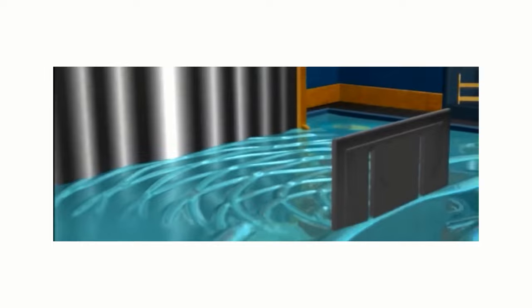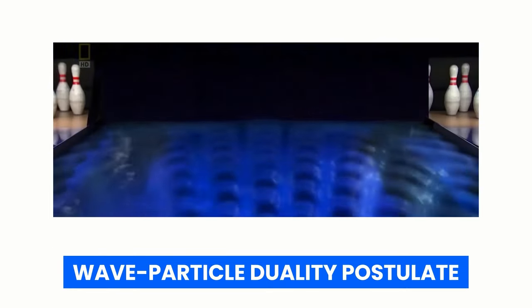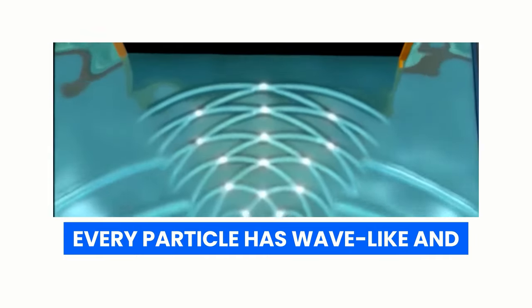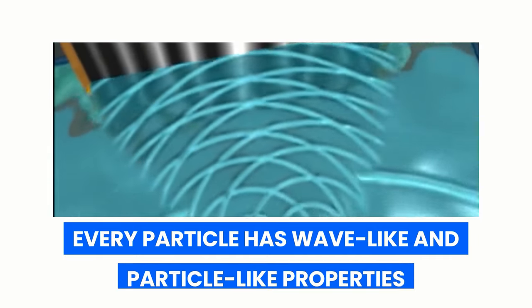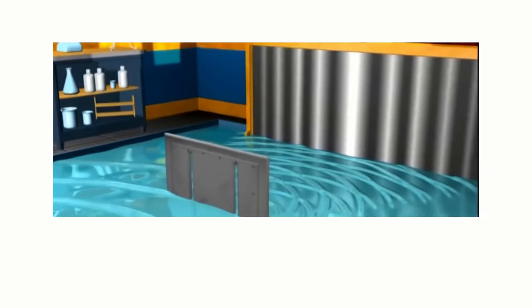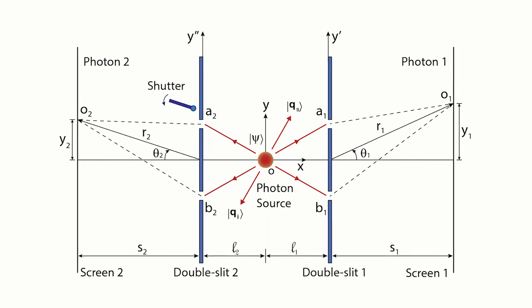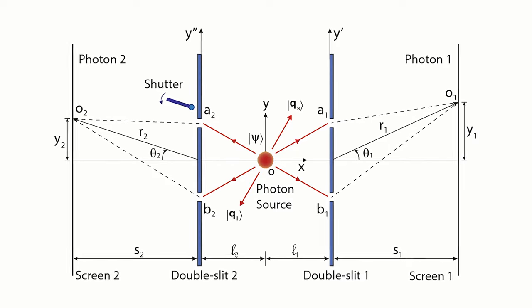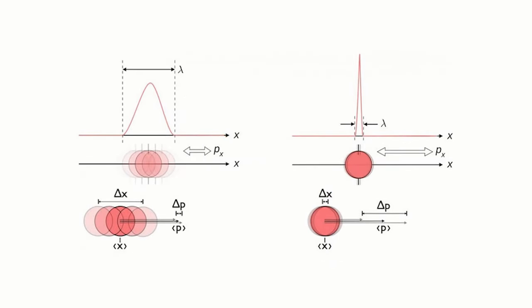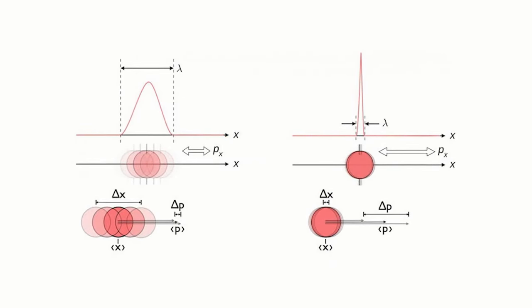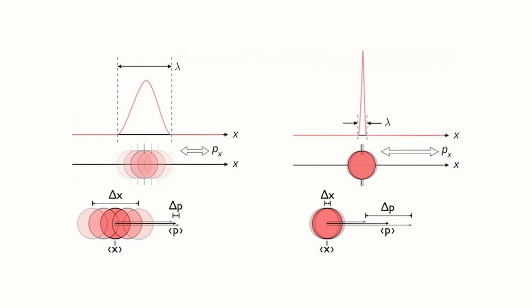The wave-particle duality of matter and radiation can be explained mathematically using the wave-particle duality postulate, which states that every particle has wave-like and particle-like properties. The wave-function describes particles' wave-like behavior — it is a mathematical function that describes the probability of finding the particle at a specific position. The particle-like behavior of particles is defined by the particle's position and momentum, which are properties that can be measured.